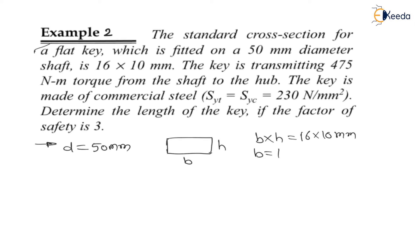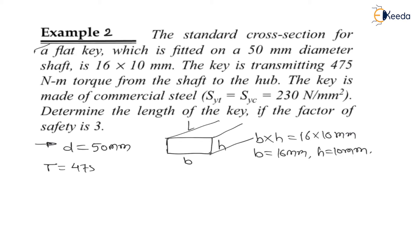Therefore the width of the key is 16 mm and the height of the key is 10 mm. The key will be having some length to be determined. The key is transmitting 475 newton meter torque from the shaft to the hub, which is 475 × 10³ N·mm.